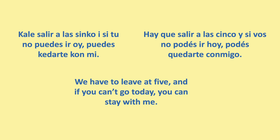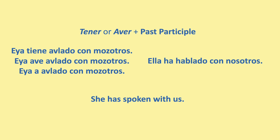The present perfect: the construction for the present perfect is with 'tener' or 'haber' plus the past participle. 'Tener' means to have and 'haber' also means to have. In modern Spanish today you don't use 'haber' to say to have possession over something — you would just say 'tener'. However, 'haber' is used in this past tense. So in Ladino there are three ways of saying what in Spanish you only have one way of saying. For example: 'ella tiene hablado con nosotros' / 'ella ha hablado con nosotros', whereas in Spanish you would say 'ella ha hablado con nosotros' (she has spoken with us).